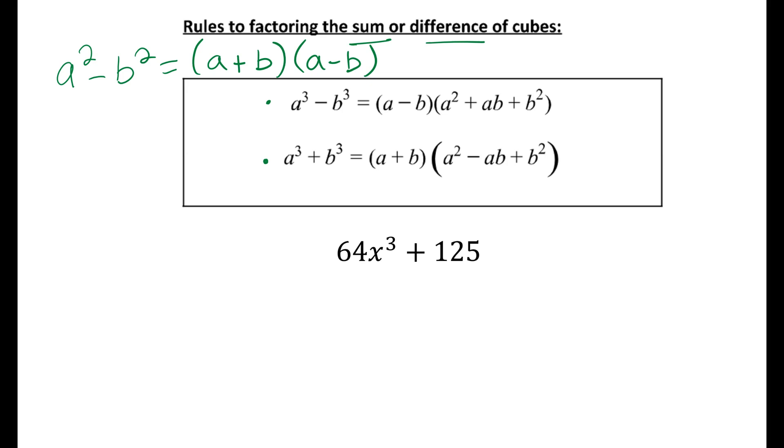So if we're subtracting two things cubed, that factors into the first thing minus the second thing times the first thing squared plus the first thing times the second thing plus the second thing squared.